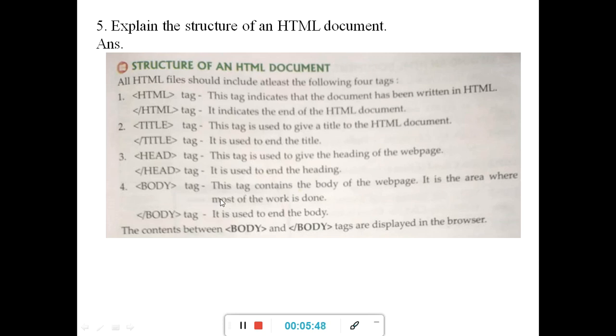Explain the structure of an HTML document. This is the four important parts of the HTML document. First part is the HTML starting and ending tag. What does this do? It indicates the document has been written in HTML. If you don't give this HTML starting and ending tag, then you cannot write any HTML document. When you are writing in the beginning this starting tag, it indicates that you are writing the documents in HTML. And this tag indicates the end of the HTML document. Then title tag. It is used to give a title to the HTML document and this tag indicates the end of the title. Head tag is used to give the heading of the web page. And the ending head tag is used to end the heading.